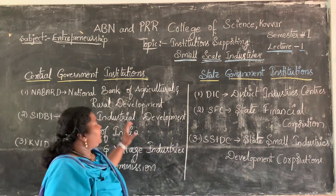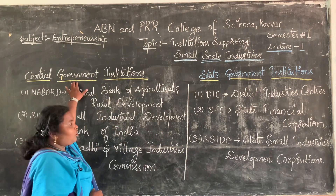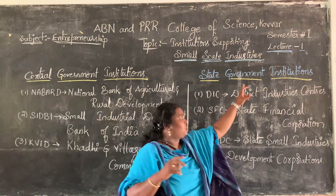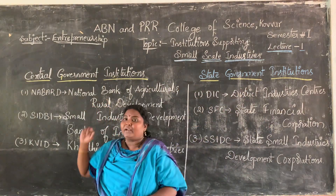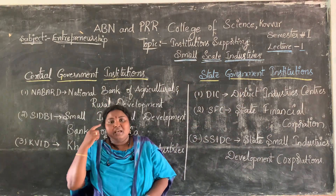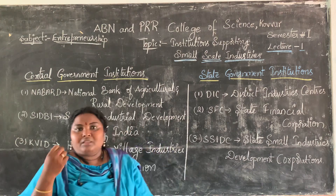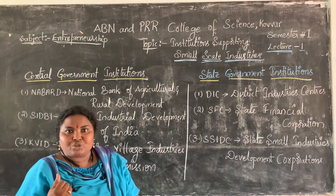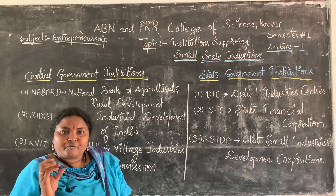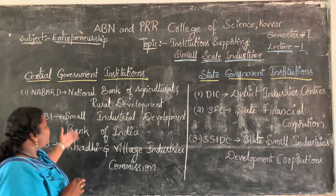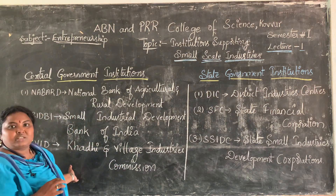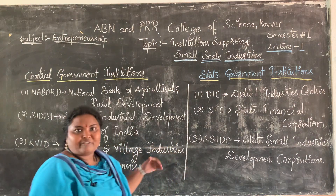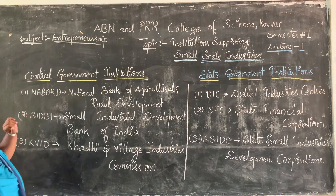So there is a lot of importance to support small scale industries for the development of the country. The state government and central government are supporting these rural small scale industries with the help of institutions. What are those institutions? We will look at them in detail.